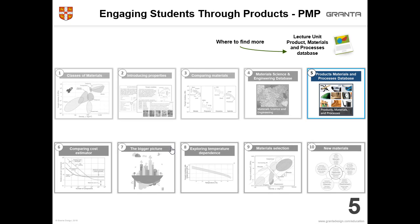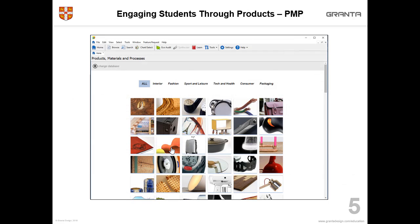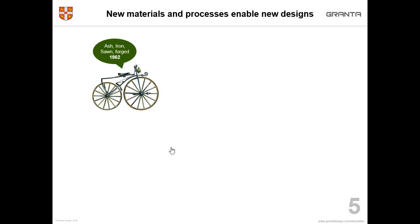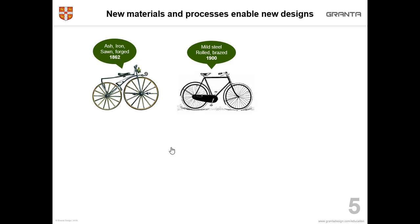The Products, Materials and Processes database is another of our new databases, and you can find out more about it in the lecture unit. It focuses on products and tries to engage students in materials and processes by starting with an interesting product. You can click on the engaging home page to choose the product that you're interested in. We have a series of different products that show how a product is affected by the material used to make it — for example, we have many bikes in the database.